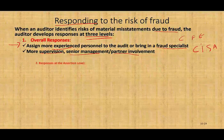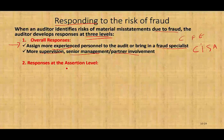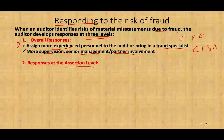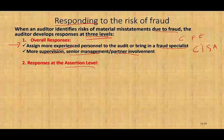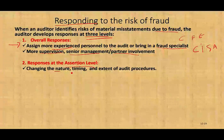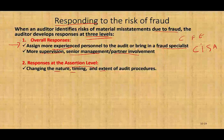We also have to respond to the risk at the assertion level. Assertion means if there's a problem with completeness, if there's a problem with the assertion of occurrence, or if there's a problem with disclosure. On the assertion level, what we do is we change the nature, timing, and extent of the audit procedures. Simply put, we're going to do more work.